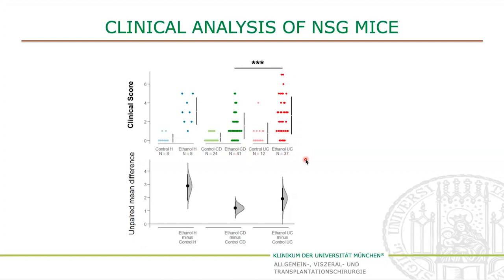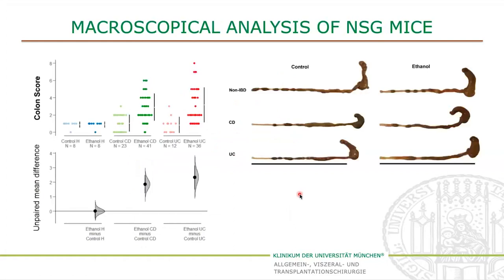The second score we did was the colon score, looking at the macroscopic appearance of the colon. The black bar here indicates 10 cm — usually the colon should be at least this length or longer. There was not really a difference between the control and the ethanol challenge group for the NSG non-IBD mice; after the challenge the colon looks a bit shorter but is still tight and has solid stool. In contrast, both NSG-UC and NSG-CD mice showed soft or liquid stool as well as dilatation after the ethanol challenge, leading to higher scores. Again, it was most pronounced in the NSG-UC model, where areas of dilatation are visible and stool looks softer.